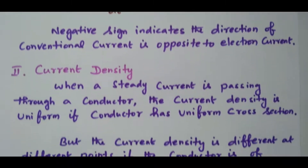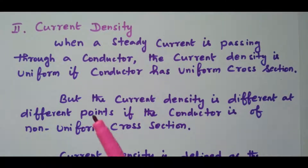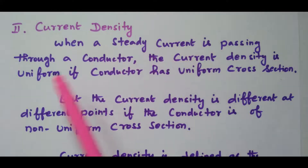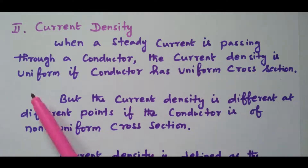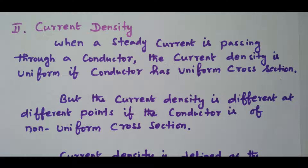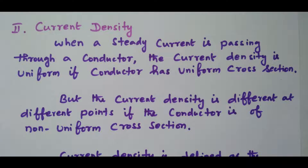Now we will see the current density. Normally, density refers to either length, area, or volume. Here, we are referring to area. If a steady current is passing through a conductor, the current density is uniform if the conductor has a uniform cross-section. If the cross-section is non-uniform, then the current density will also be non-uniform — it will differ from point to point.